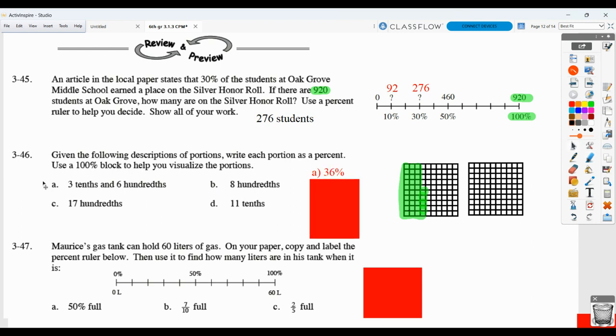So 36 hundredths is the same as 36%. Then for B, they want you to do 8 hundredths. So you would basically be showing eight squares that are shaded because, again, each square represents a hundredth. So you would have this. And 8 hundredths is the same as 8%.